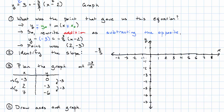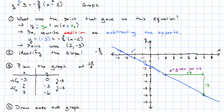Now I'm ready to graph. I'm going to plot the point: x is 2, y is negative 3 — this is my given point. Then I'm going to use the slope to get another point. My slope says go right 5, down 3. Here's another point, and now I graph the line through those points. Notice that the other point in my table ended up on the line, because that point ought to be on the line. Two points is enough to actually determine a line. And there's our graph.